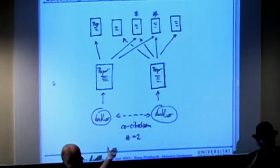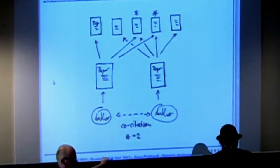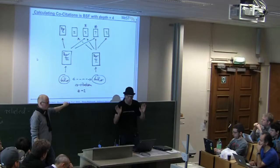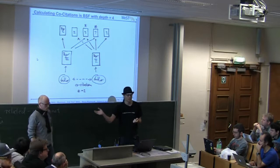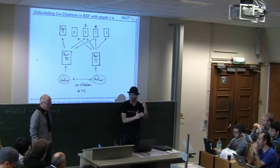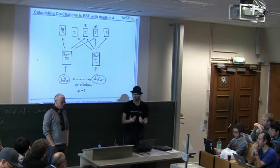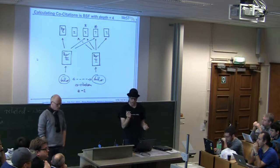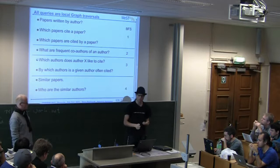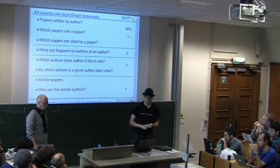Heinrich did this analysis on arXiv, which covers almost the full last ten years of mathematics. He has a PhD in math from Oxford. When we ran these recommenders on him, he said: most of the people in the list he knew very well — but there was one guy doing exactly the same stuff that he'd never heard of before. Other queries we support: papers written by an author, which papers cite a paper, which papers are cited by a paper, frequent co-authors, which authors does author X tend to cite, similar papers, similar authors. They're all just breadth-first search.